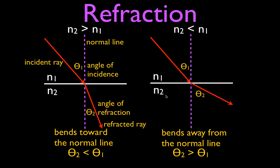Those are the only two cases. Entering a material with a greater index of refraction: towards the normal line. Entering a material with a lower index of refraction: away from the normal line. That's it — it's either towards the normal line or away from the normal line.